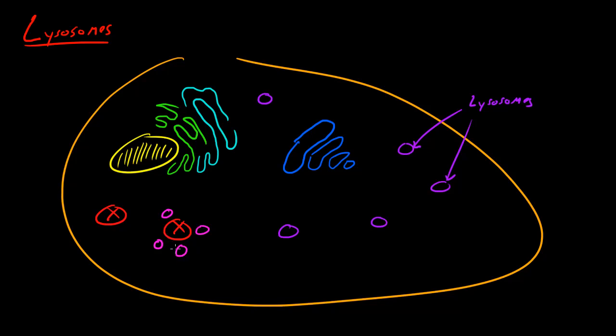Now once it's broken up into smaller pieces, the cell is either going to use those pieces to build something else or it's just going to spit them out of the cell. So basically lysosomes break up stuff that's harmful to your cell and aside from that they also help remove dead organelles.